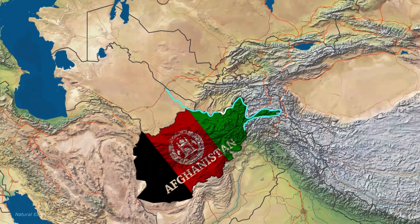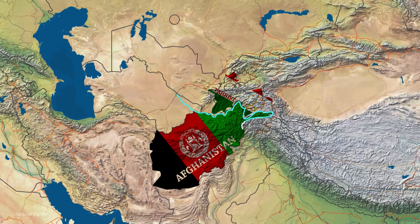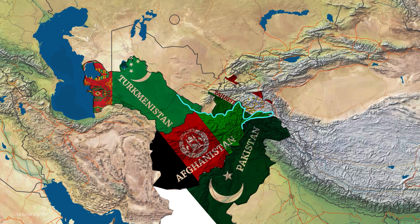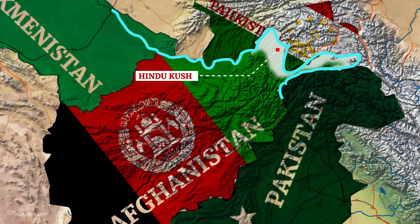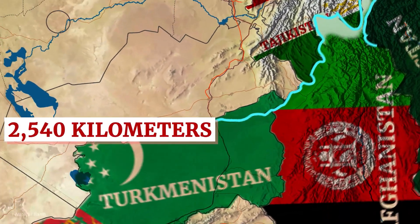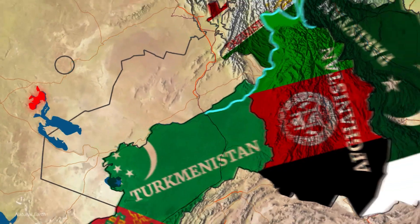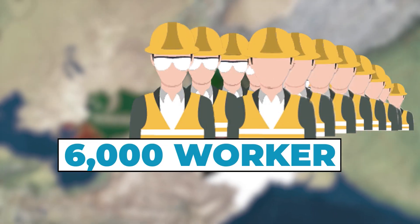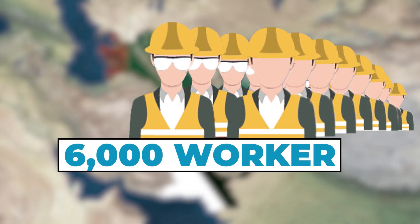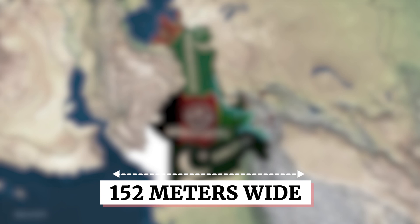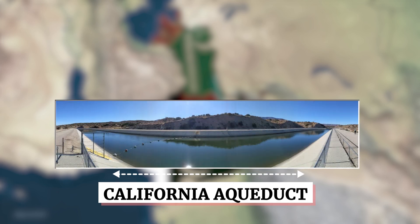The Amu Darya River forms Afghanistan's border with Tajikistan, Uzbekistan, and Turkmenistan. It originates in the Hindukush and Wakhan regions of Afghanistan and stretches for 2,540 kilometers before reaching the Aral Sea. About 6,000 workers are now operating excavators and heavy-duty trucks around the clock, working to carve a ditch 152 meters wide — wider than the California aqueduct.